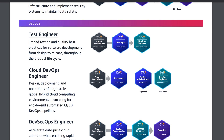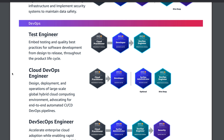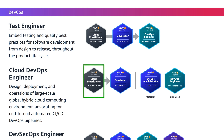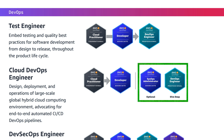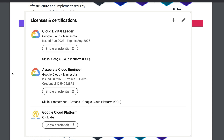The Cloud DevOps Engineer path is the one I want to go with. The roles and responsibilities involve designing the deployment and operations of large-scale global hybrid cloud computing environments and advocating for end-to-end automated CI/CD DevOps pipelines. The path requires Cloud Practitioner foundational certification, then Developer Associate, with SysOps Administrator Associate as optional, and finally DevOps Engineer Professional. This is the path I'm focusing on now — I'm currently preparing for AWS Cloud Practitioner after achieving Google Cloud Digital Leader and Associate Cloud Engineer.